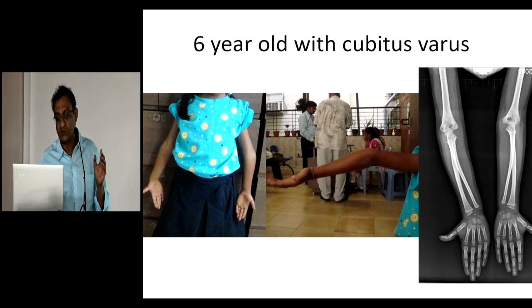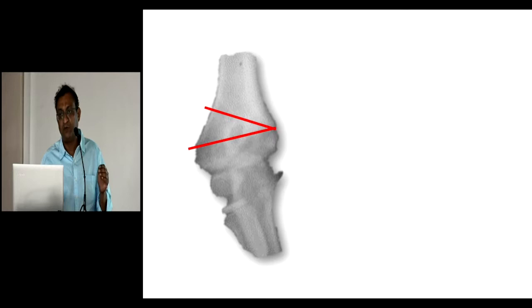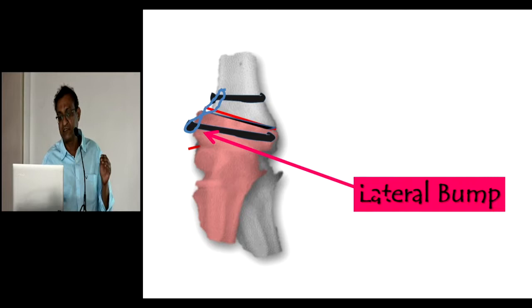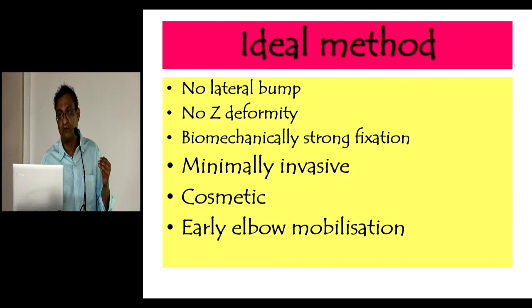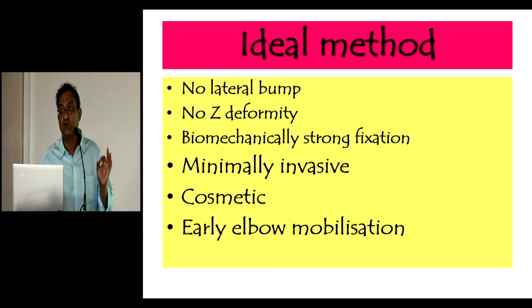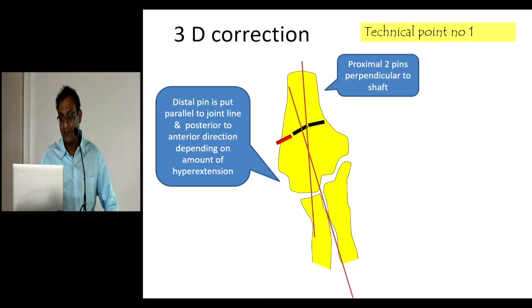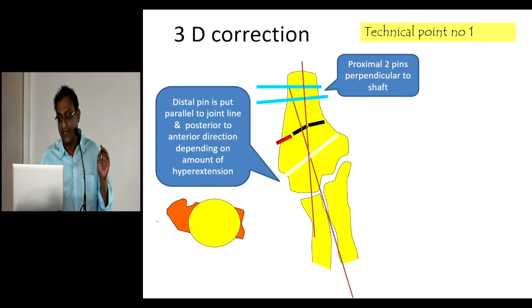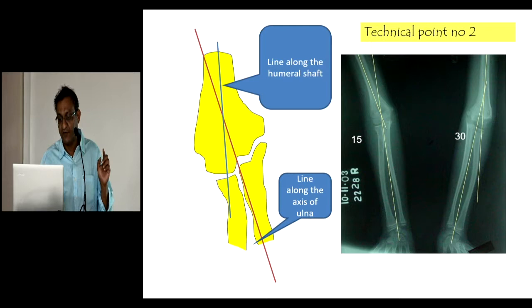The fixator pins are being used not only for deformity correction but also as a holding device. Now, cubitus varus is another common deformity following a supracondylar fracture. In residency we were taught to do a closed-wedge osteotomy fixed with two screws and a tension-band wire, but this leads to a lateral bump and in many cases the medial hinge broke away causing recurrence or under/over-correction. At KEM, a patient's father asked for a scarless correction, so we developed a 3D correction — correction of varus, extension, and rotation — all three possible using the fixator as a correction device.